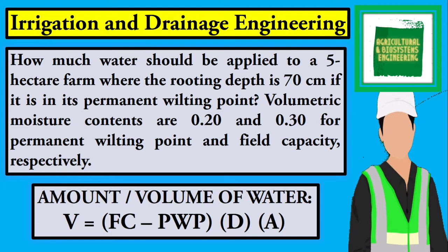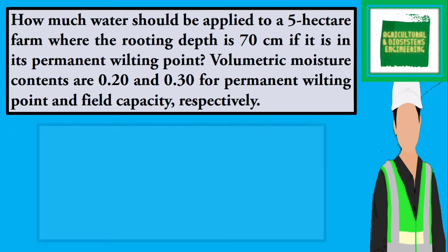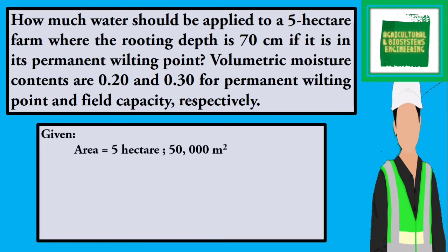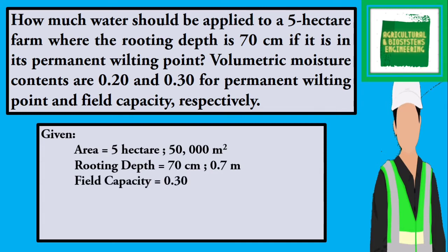Volumetric moisture contents are 0.20 and 0.30 for permanent wilting point and field capacity, respectively. The first thing we have to do is identify the given. We have the area of 5 hectares, which is equal to 50,000 square meters. The rooting depth is 70 cm or 0.7 meters. The field capacity is 0.30, and the permanent wilting point is 0.20.